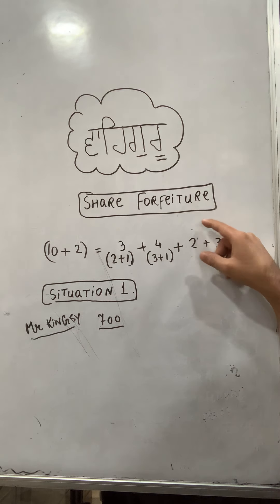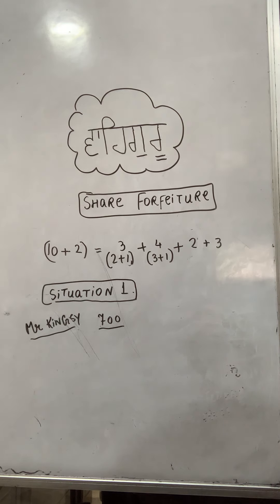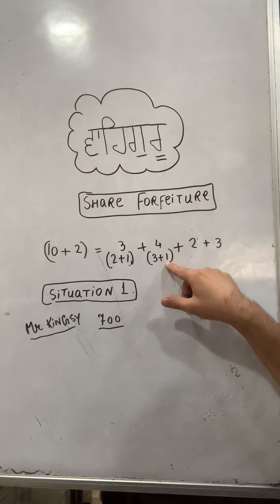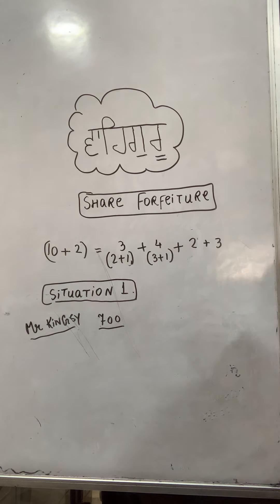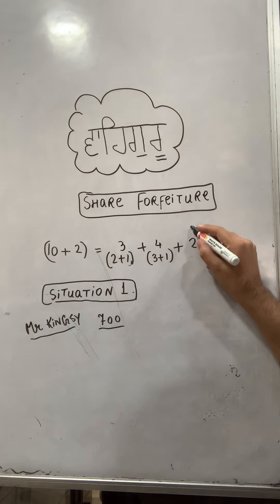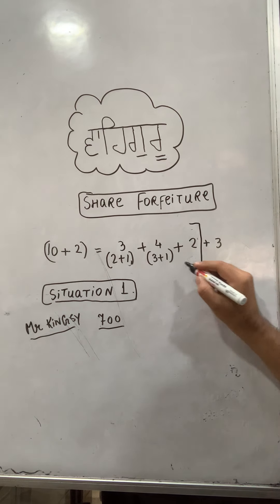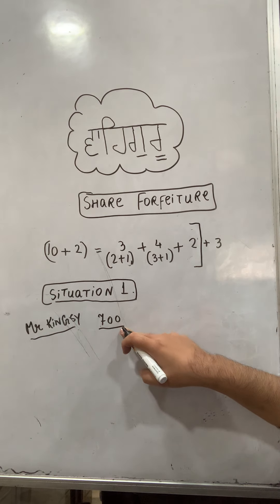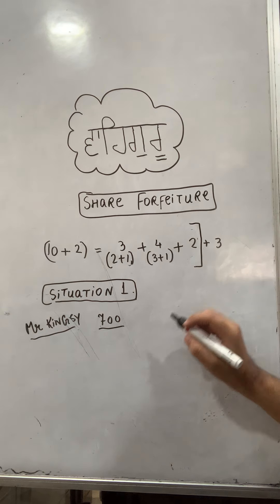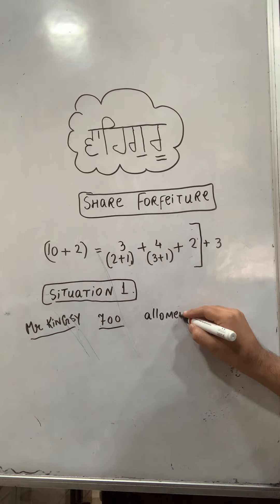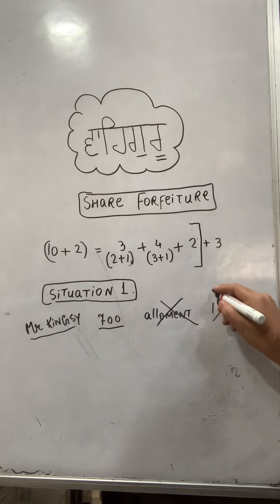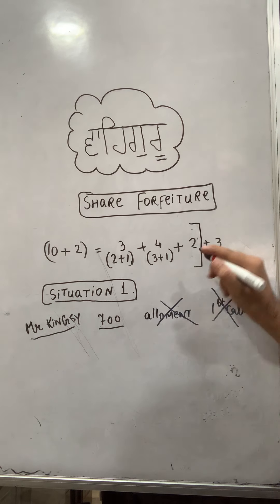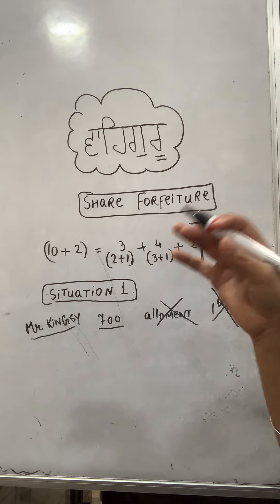We are taking Situation 1: Mr. Kingsy, who has 700 shares of Reliance Industries Limited, has not paid the allotment money, first call, and final call. The company has cancelled his shares. The entry starts by identifying where each amount was received from.